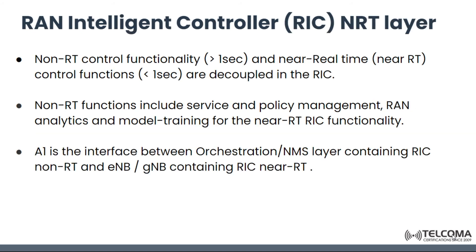The RIC has a non-RT layer with control functionality operating at greater than 1 second, and a near-RT control function operating at less than 1 second. These include service and policy management, analytics, and model training. The A1 interface connects the orchestration-containing non-RT RIC with the E-NodeB or G-NodeB containing the near-RT RIC.